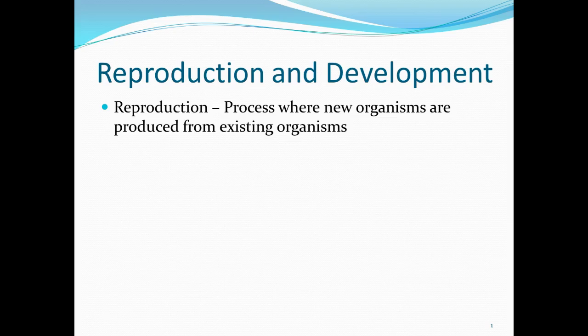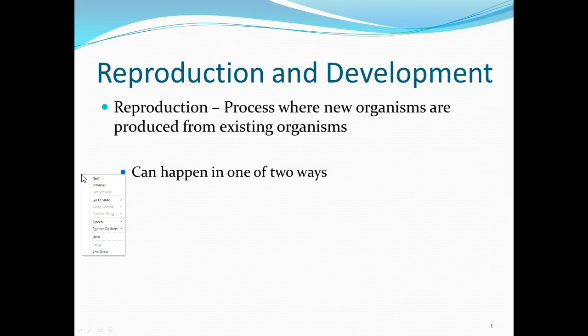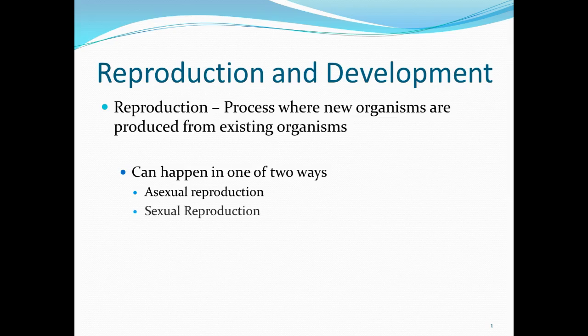This is breeding. This is having babies. This process can actually occur in one of two ways: there's asexual reproduction, which we've kind of already talked about, and there's also sexual reproduction.